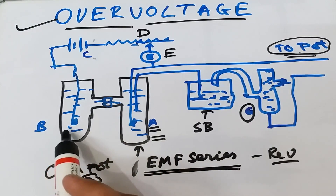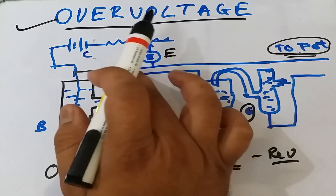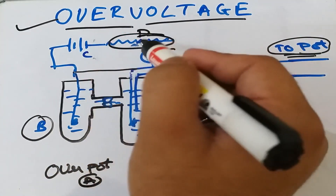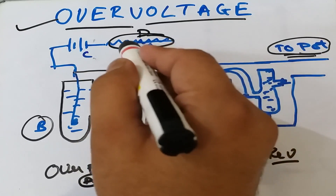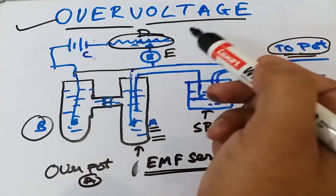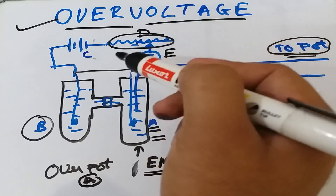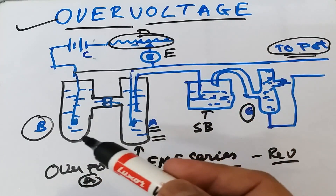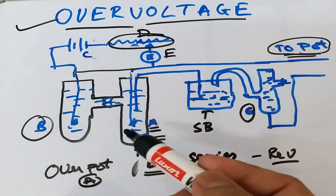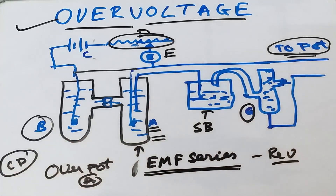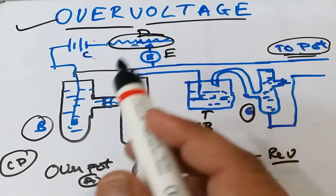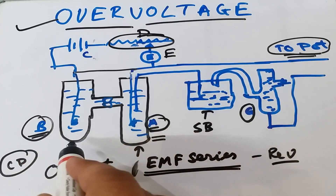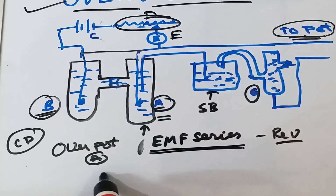Similarly, the overvoltage of electrode B can be measured the same way. The experiment can be repeated with different currents used for electrolysis to obtain overvoltage values at different current densities. Since the area of the electrodes is known, the current density can also be easily calculated. With this simple setup, we can easily measure hydrogen overvoltage or oxygen overvoltage.